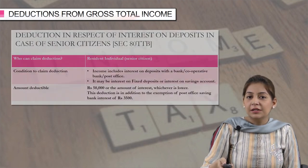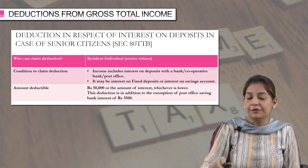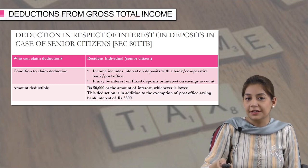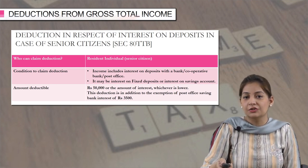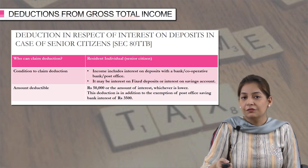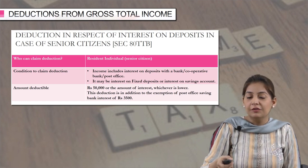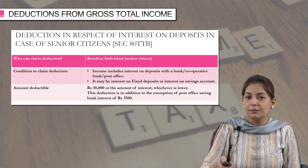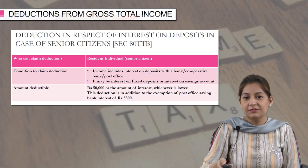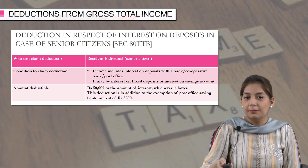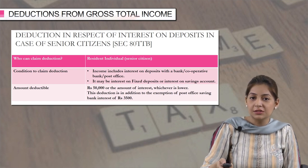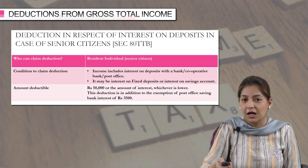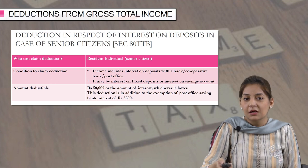Next, section 80TTB is the deduction in respect of interest on deposits in the case of a senior citizen. The deduction can be claimed under 80TTB only by a resident individual who is a senior citizen and whose income includes interest on deposit with a bank, cooperative bank, or post office — it may be interest on FD or interest on savings account. So when we discuss 80TTA, we talked only about savings account interest. When we talk about 80TTB, it includes interest on fixed deposit as well as savings account. The amount of deduction is either the amount of interest or rupees 50,000, whichever is lower — so here the limit is higher: 50,000 compared to 10,000 in the previous section.